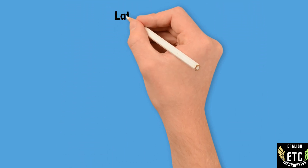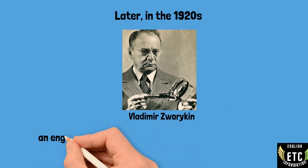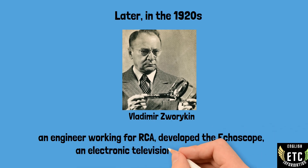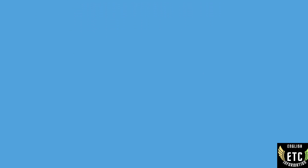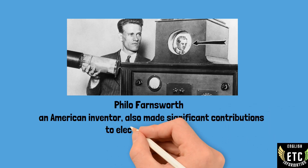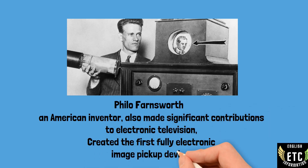Later in the 1920s, inventors began to move away from mechanical systems toward electronic television. Vladimir Zworykin, an engineer working for RCA, developed the iconoscope, an electronic television camera tube. Philo Farnsworth, an American inventor, also made significant contributions to electronic television, creating the first fully electronic image pickup device.